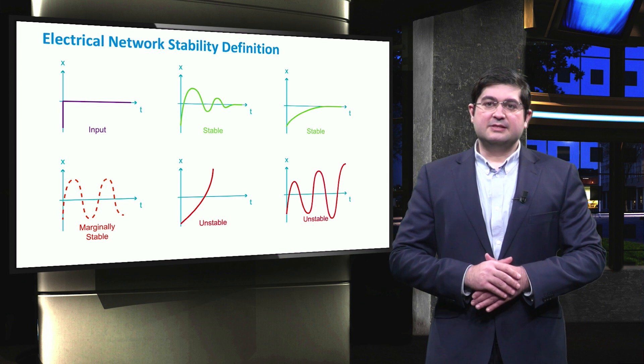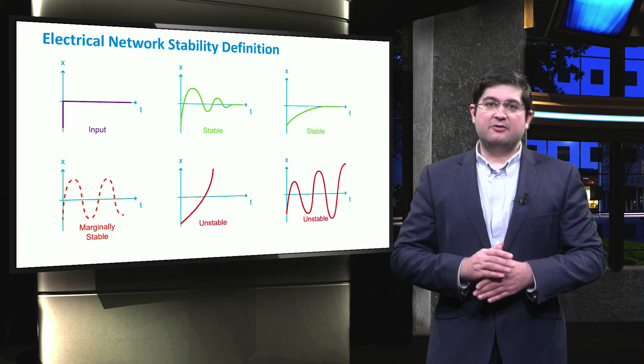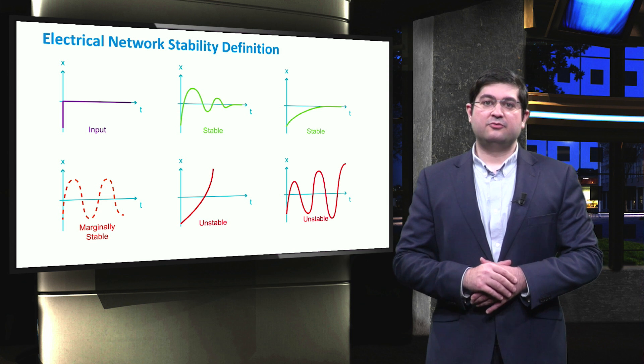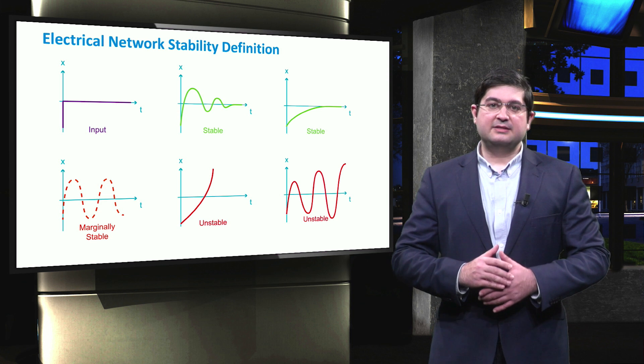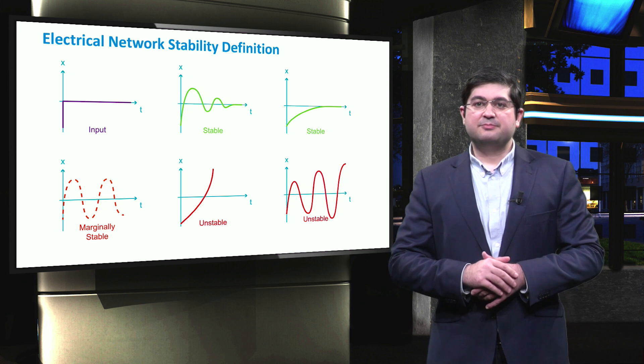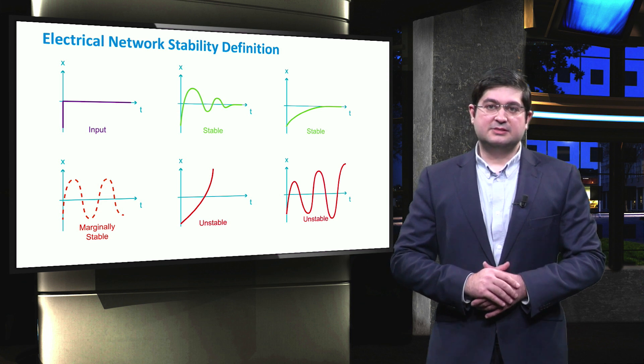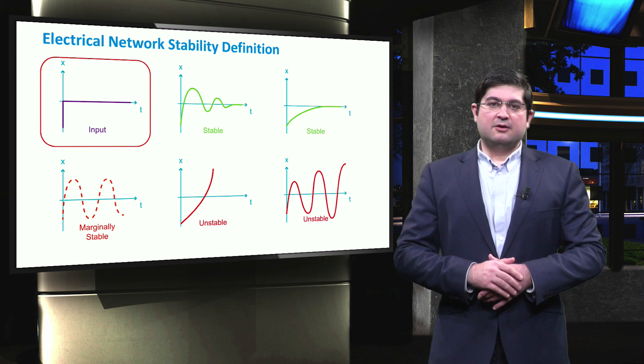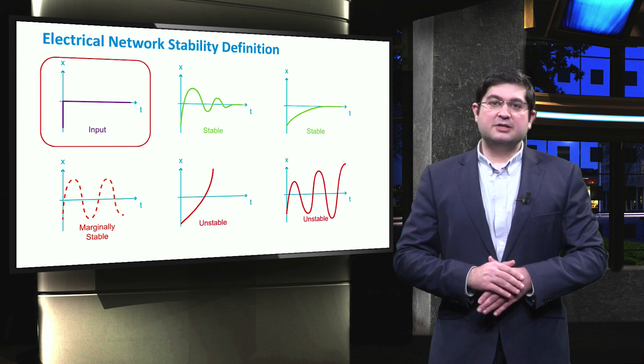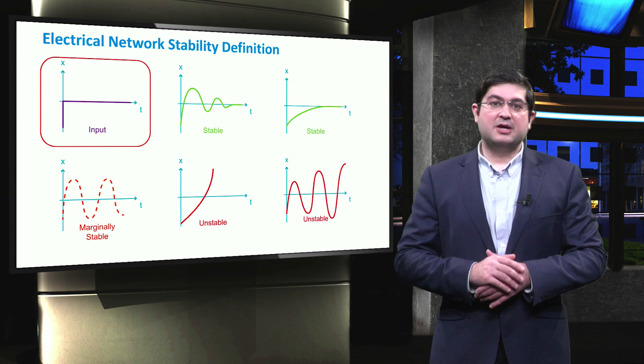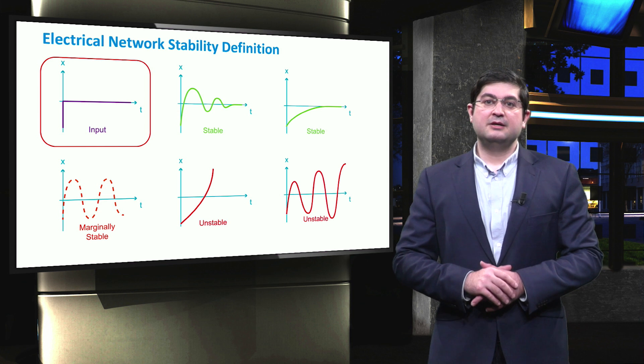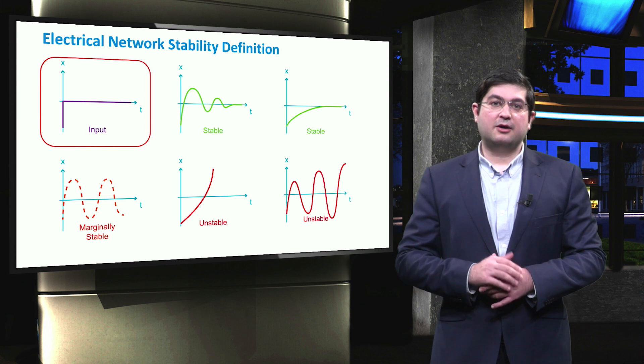Stability is defined as the ability of an electrical network for a given initial operating point to regain a state of operating mode after being subjected to a physical disturbance. For an input disturbance shown in purple color, the closed-loop response of the whole system can be either stable, marginally stable, or unstable.